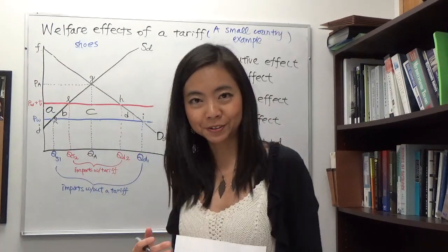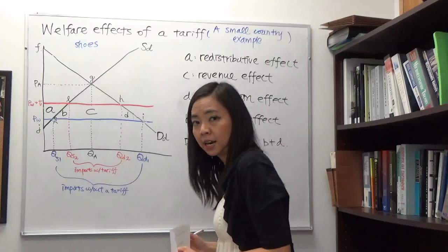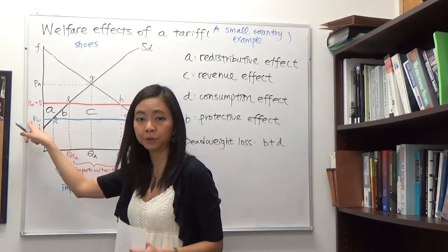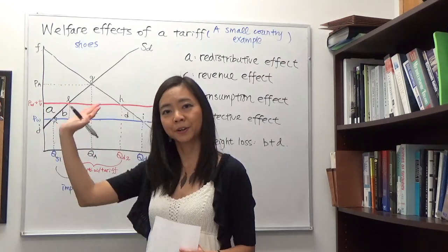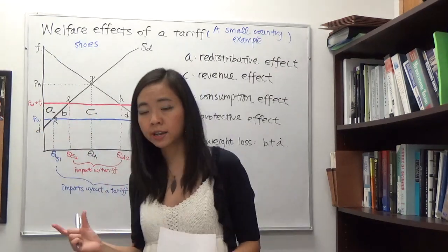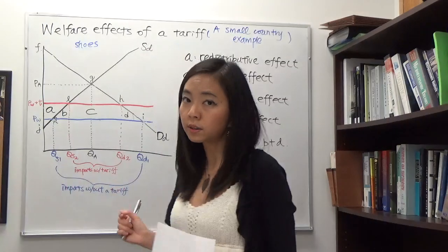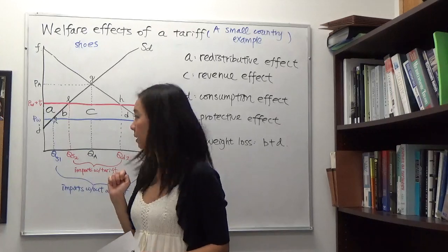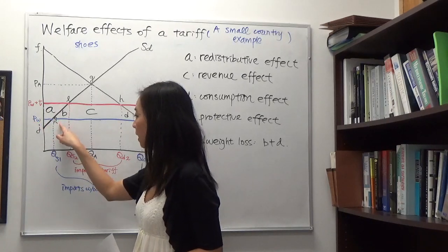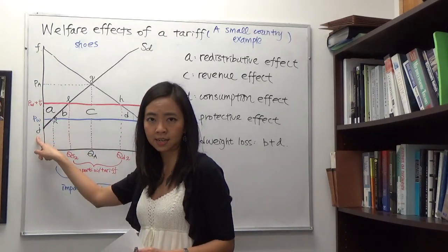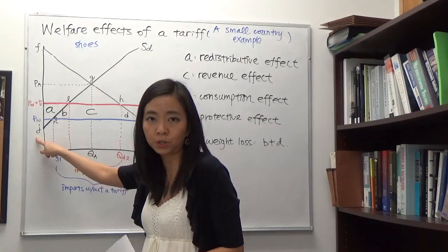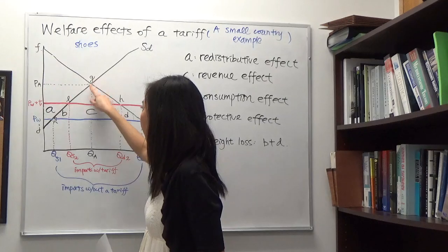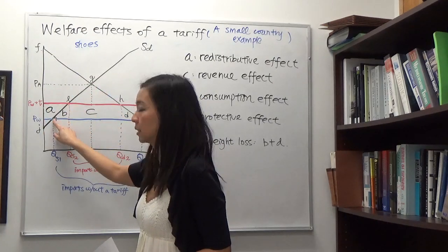What about producer surplus? Producer surplus is the area below the price received by the producer, now PW, above the supply curve. The base runs from zero to the quantity supplied, giving triangle PW-K-J. You can see that local producers really lose out — their producer surplus has shrunk quite a bit from the autarky triangle down to that tiny triangle.